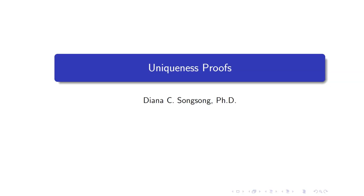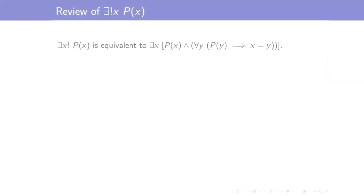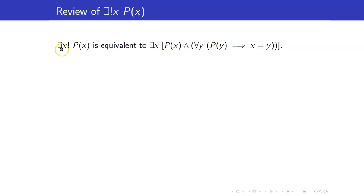In this lesson, we are going to discuss uniqueness proofs. Let us recall that the statement 'there exists a unique P of x' is equivalent to: there exists an x such that P of x is true, and if P of y is also true, then y must be the same as x, because we want x to be unique.